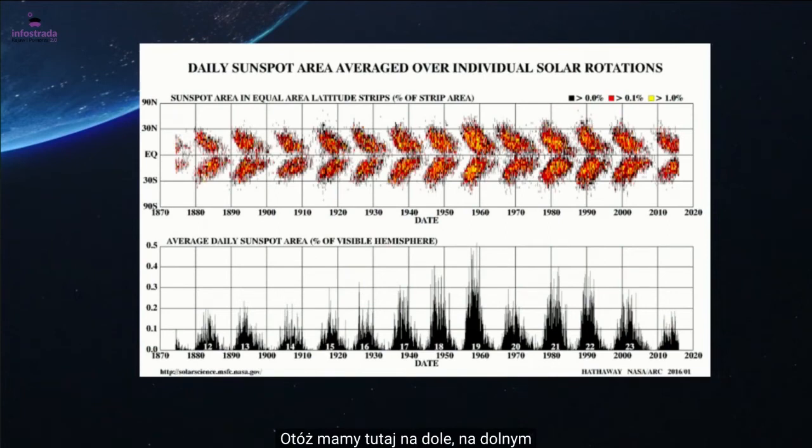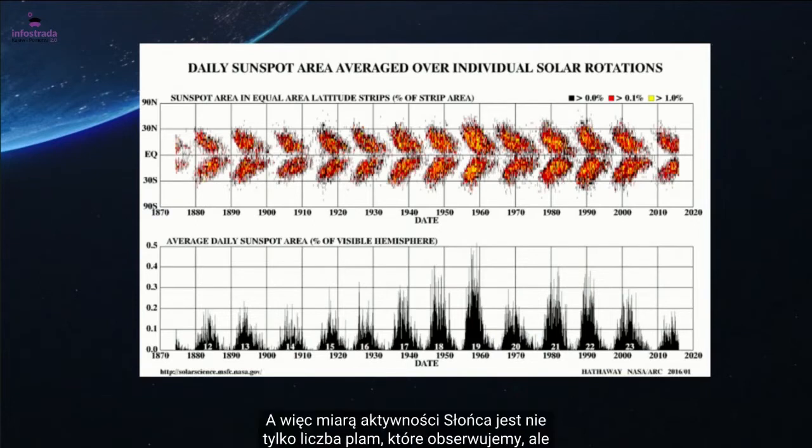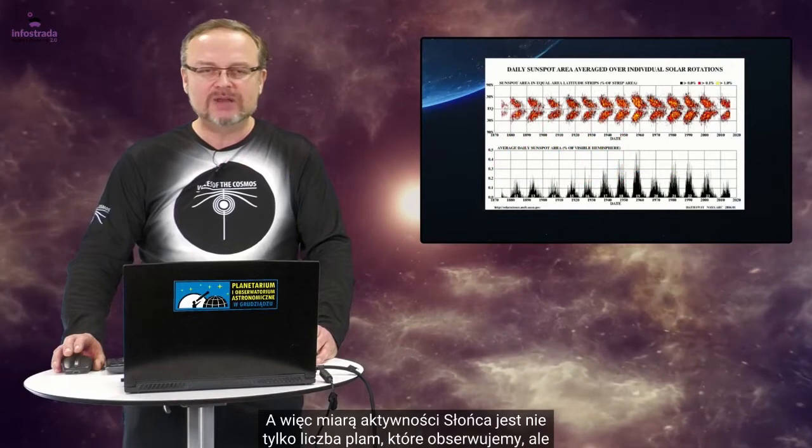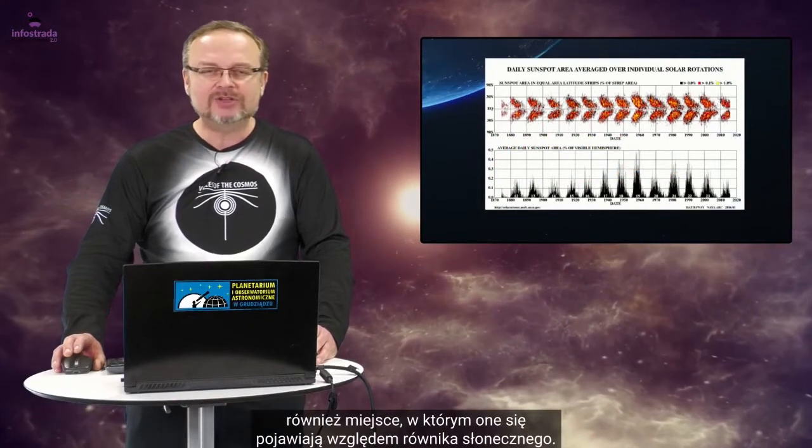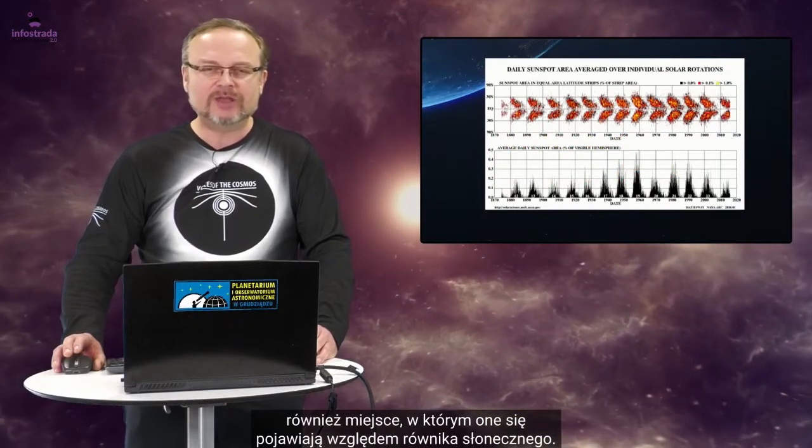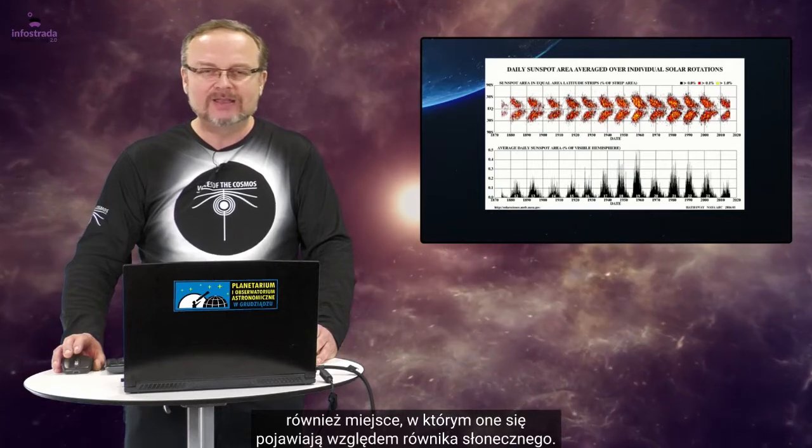Otóż mamy tutaj na dole, na dolnym wykresie zaznaczone zmiany plam w różnych latach. To jest dokładnie to, co przed chwilą widzieliśmy, natomiast u góry mamy tak zwany wykres motylkowy. A więc miarą aktywności Słońca jest nie tylko liczba plam, które obserwujemy, ale również miejsce, w którym one się pojawiają względem równika słonecznego.